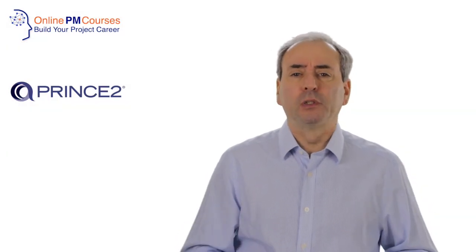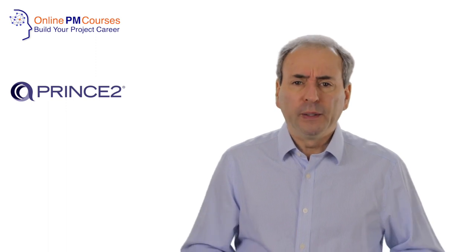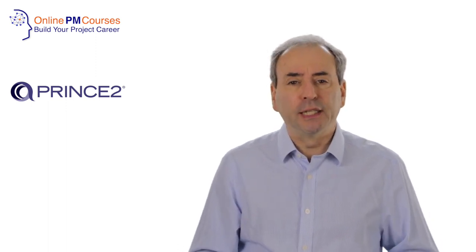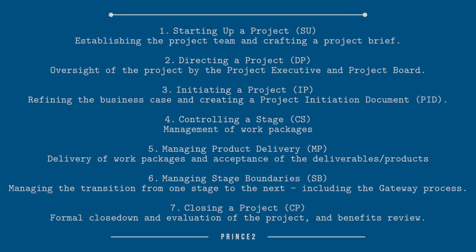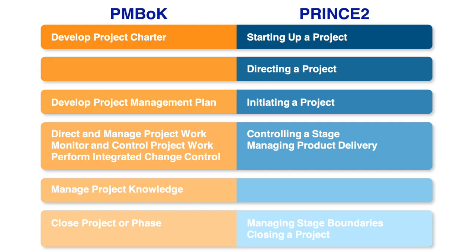PRINCE2 also has seven project processes. These seven form the whole set of project processes within PRINCE2, and I think they all define project integration. The first is starting up the project, then directing a project, initiating a project, controlling a stage, managing product delivery, managing stage boundaries, and finally closing a project. I'll put up on screen now an image which shows how we might compare the two frameworks, and you should be able to see clearly how similar the two frameworks are even though they use very different terminology — and the fact that PMBOK identifies all of these as project integration whilst PRINCE2 effectively says this is how you do a project.